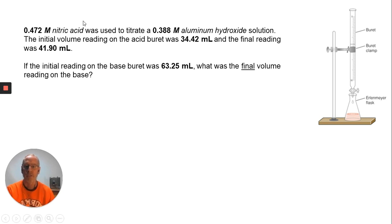Here's another question from the test. A 0.472 M nitric acid was used to titrate 0.388 M aluminum hydroxide. If the initial volume reading on the acid was 34.42 and the final reading was 41.9, the question is asking: if the base started at 63.25 mL, what's the final volume? This is asking us to do a similar type calculation of a neutralization, but then we have a little twist. We have to figure out how much base was added and then figure out where that would put it on our burette.